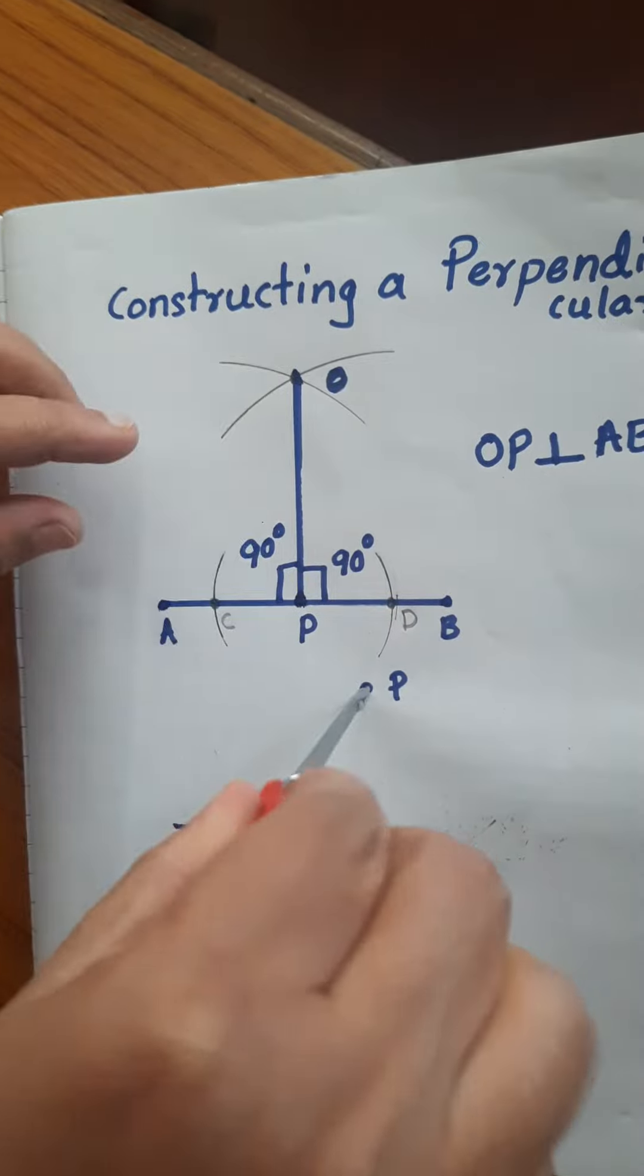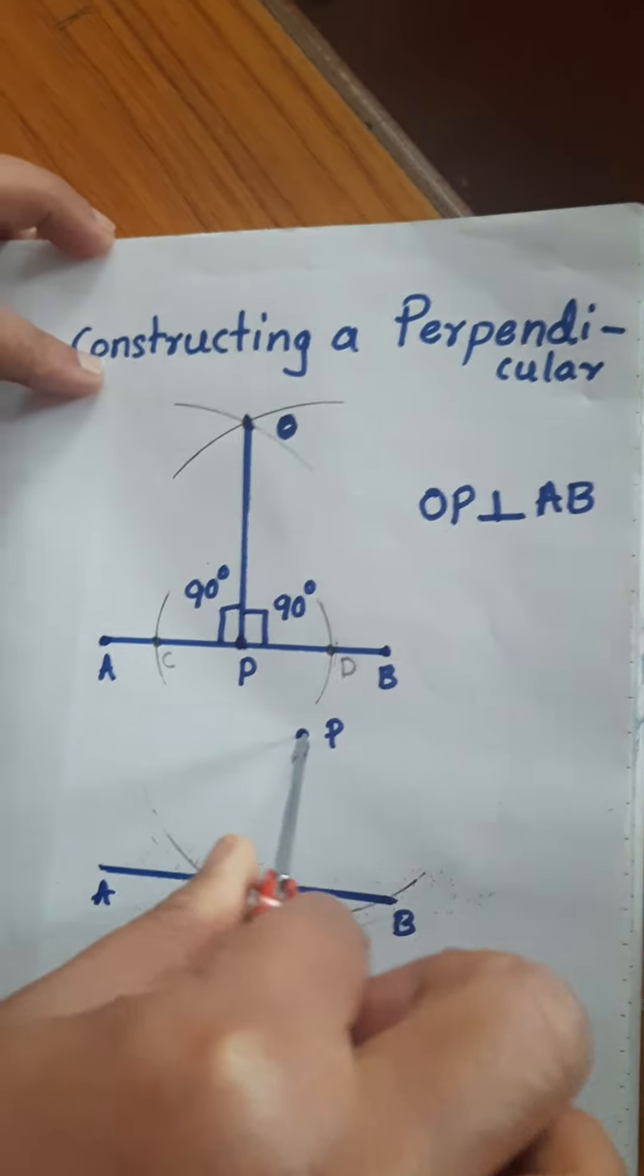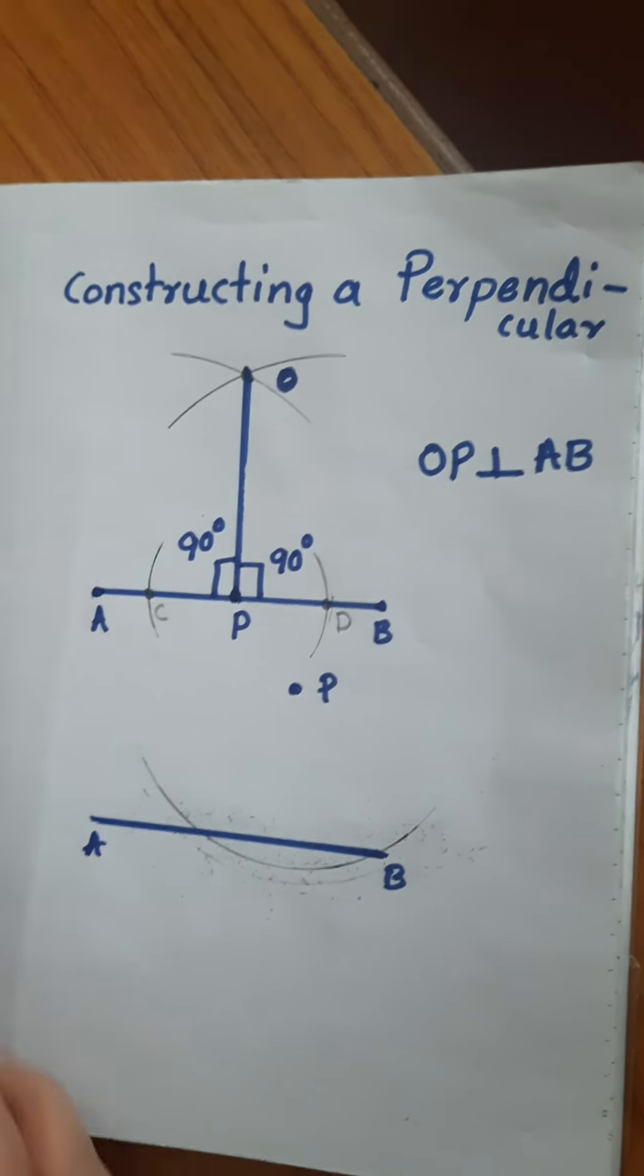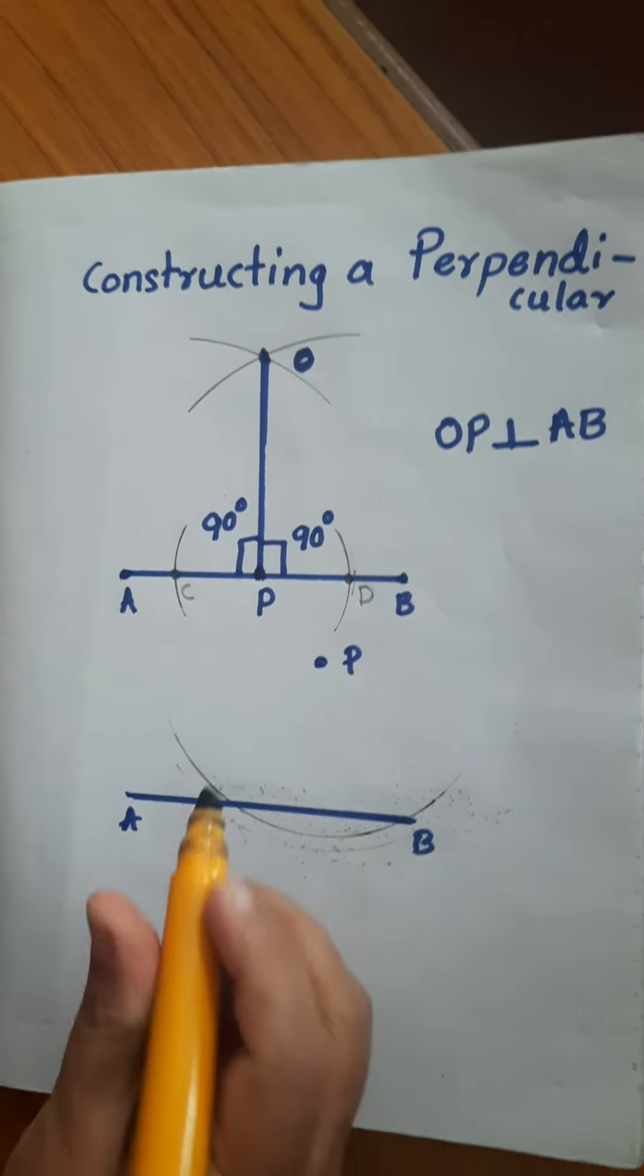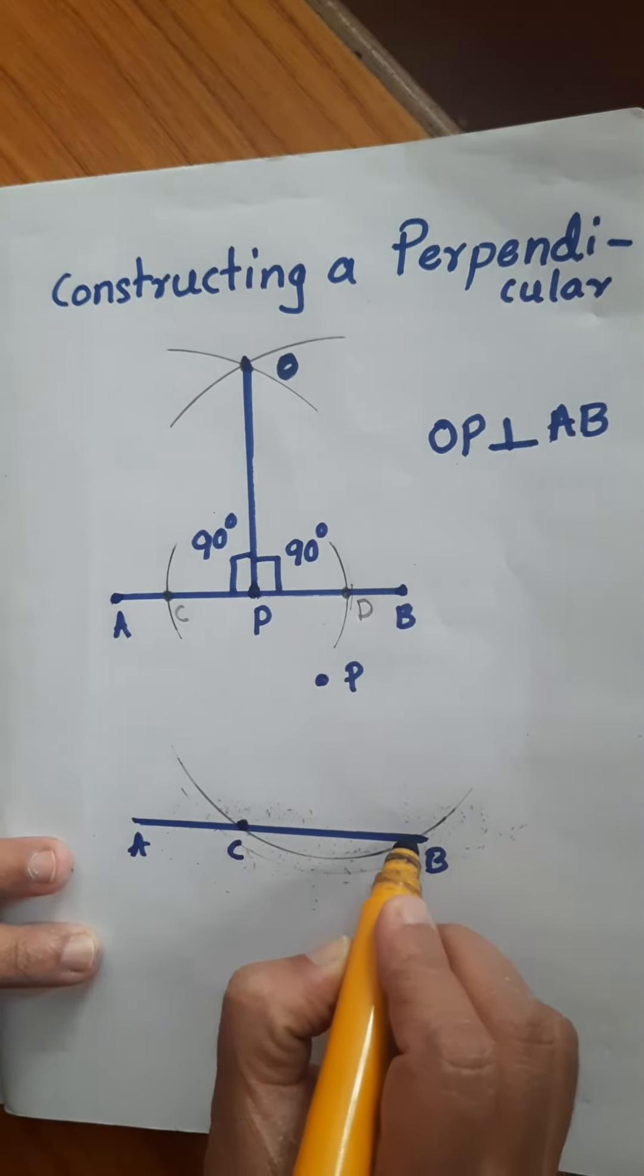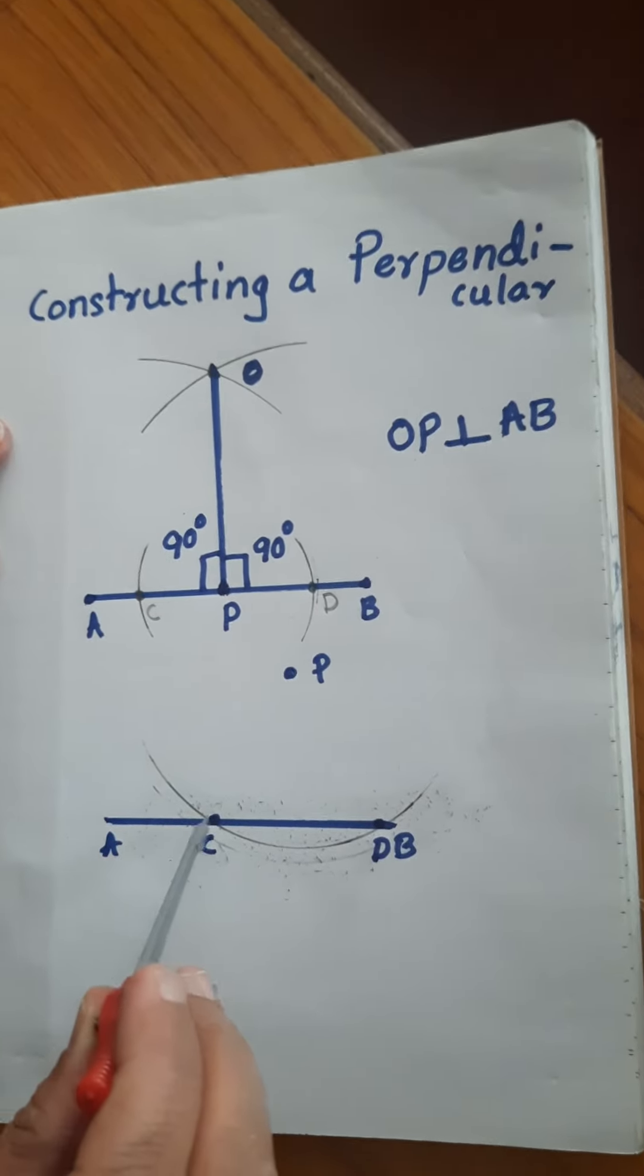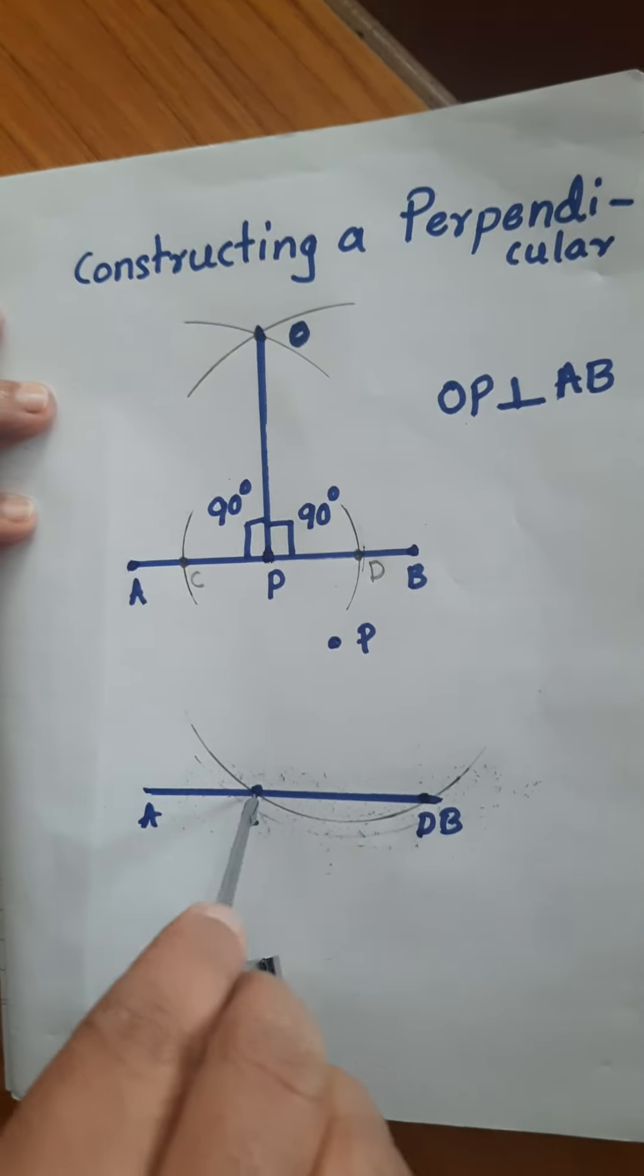Reduce the length until it touches both sides. Based on our requirement, adjust the arms. Now it is touching the line here and now it is touching both. Mark the points touching here as C and here as D.